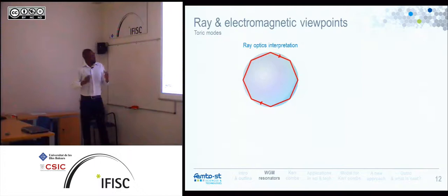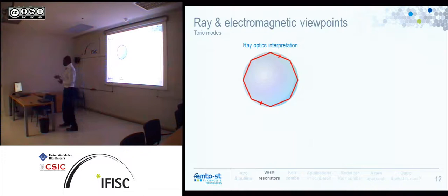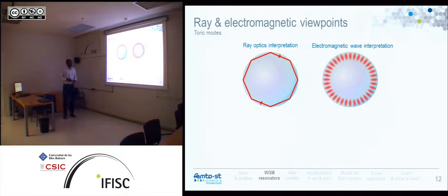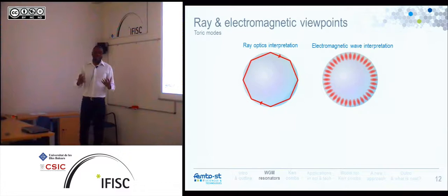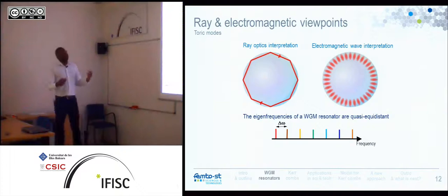At the introduction of this talk, I mentioned Rayleigh's theory, which used first ray acoustics and then wave acoustics. Here in optics, it's the same. We have a ray optics interpretation that is very intuitive and useful, and we also have an electromagnetic wave interpretation: we have a cavity with light inside, so we solve the Maxwell equations with the suitable boundary conditions to find the mode profiles and eigenfrequencies. And surprisingly, when we make the calculation, we find that the eigenfrequencies of a WGM resonator are quasi-equidistant.